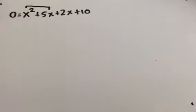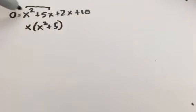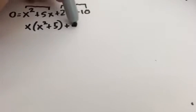So what we do is we look at the first two terms, and we just factor out what we can from those. Notice there's an x in both of them, so if I factor out an x, I'm going to be left with x squared plus 5. And then I do the same thing with the next two terms. There's a 2 in there, so I'm going to factor out a 2.